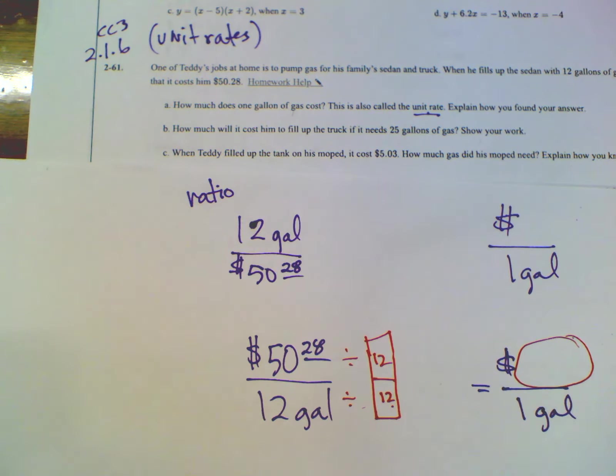So $50.28 divided by 12. I'm going to definitely use a calculator for that. On the homework, it's okay to use a calculator unless it says, do not use a calculator. Okay. So in this case, we're going to say 50.28 divided by 12. And it gives me a nice number, $4 and 19 cents. So my unit rate is $4 and 19 cents for every one gallon. That now is a unit rate. And that's how you find it. It's get the denominator to be a one of what you're trying to find the rate of. In this case, the rate was money per gallons. That's what I wanted was the money per gallons.